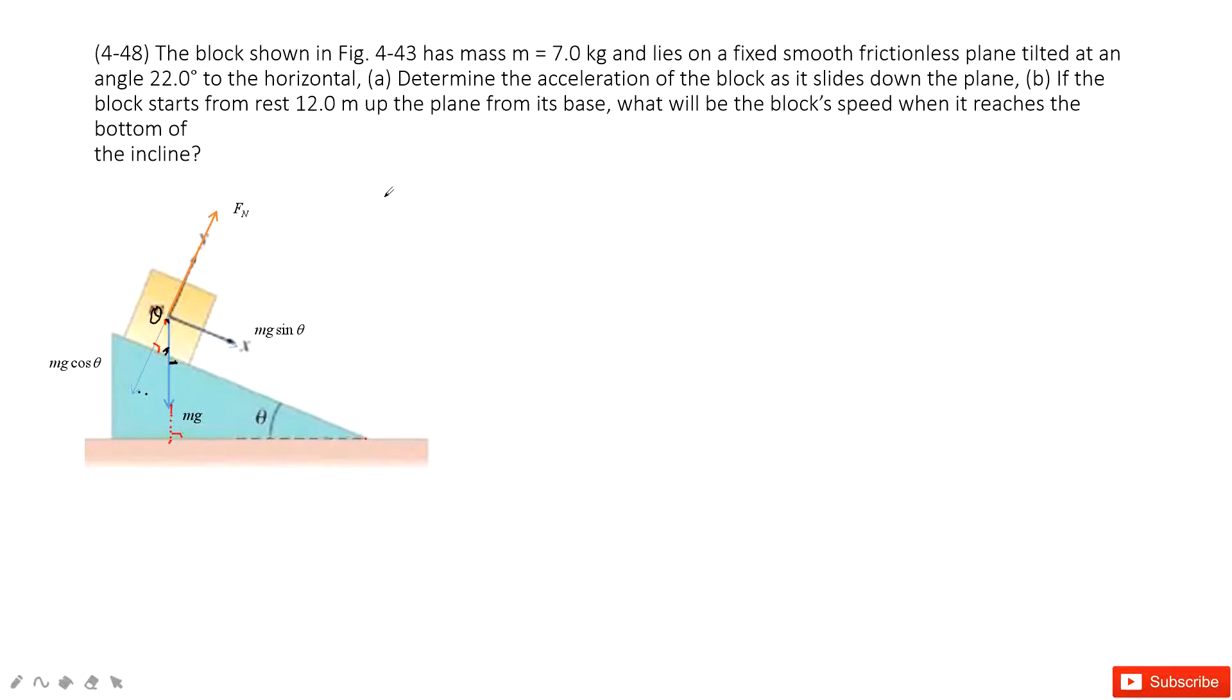The next one, we write Newton's second law. At the y component, it is F_N minus mg cosine theta equals zero. And the x component is mg sine theta equals mass times acceleration. In this way, very easily, we can get the acceleration equals g sine theta.